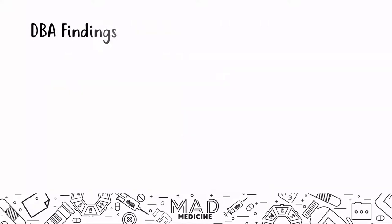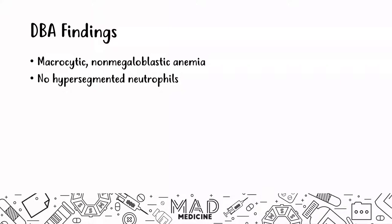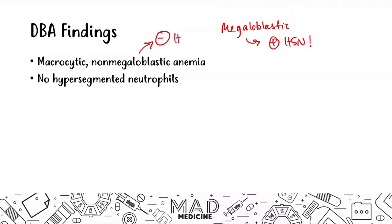When it comes to findings, there are several things very important for Step 1 that should clue you into Diamond Blackfan anemia. Number one, you should see macrocytic non-megaloblastic anemia. The macrocytic part is broad — it could be from folate, vitamin B12, orotic aciduria, Diamond Blackfan, or liver disease. But the key giveaway is that you have no hypersegmented neutrophils. In megaloblastic anemias you'll see positive hypersegmented neutrophils, whereas in non-megaloblastic anemias like Diamond Blackfan or liver disease, you will see no hypersegmented neutrophils. Very high yield.